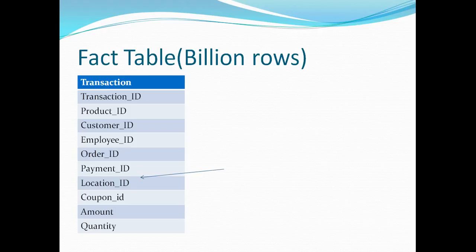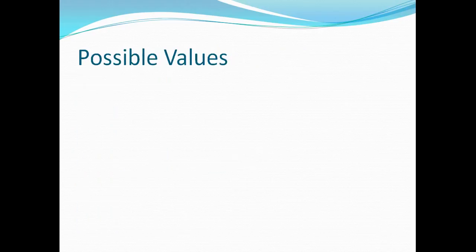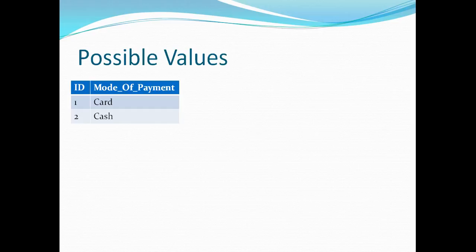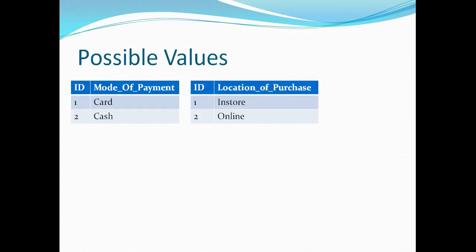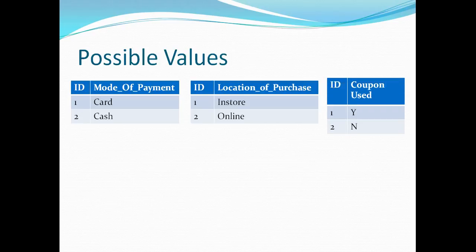The three columns in question are Payment ID, Location ID, and Coupon ID, and all these three columns have low cardinality. This is one of the characteristics of a junk dimension — they will always have low cardinality. The possible values are: mode of payment can be card or cash, the location of purchase can be in-store or online, and the coupon used can be Y or N.